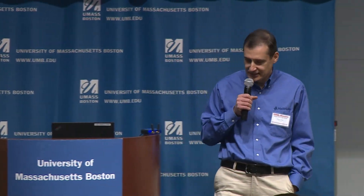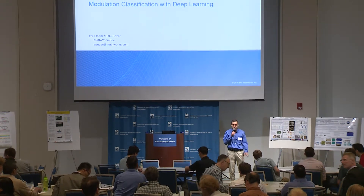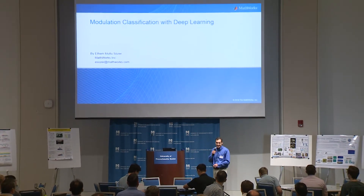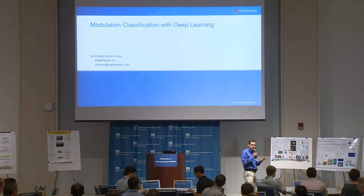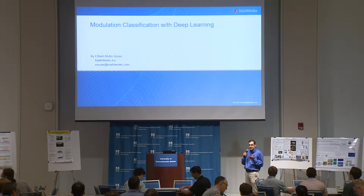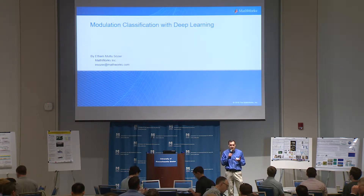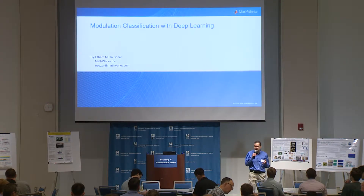Thank you very much for the nice introduction. There's been lots of interest in deep learning in recent years. It started mostly with image processing — now we can have computers that can identify dogs and cats in pictures. This leads to really nice applications, like cars with video cameras that can process streaming images, figure out where the roads are, detect other cars or pedestrians, and drive by themselves.